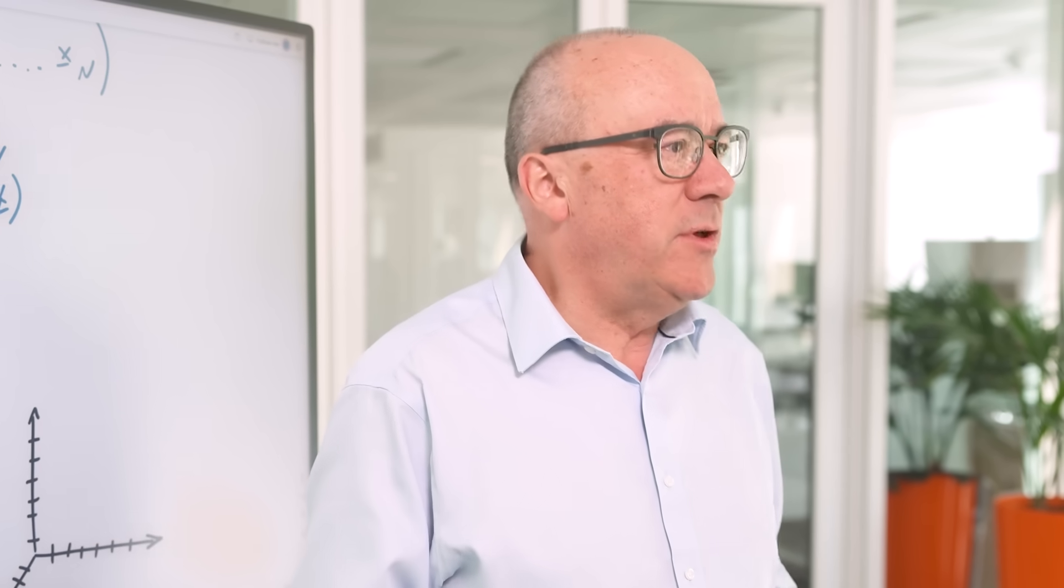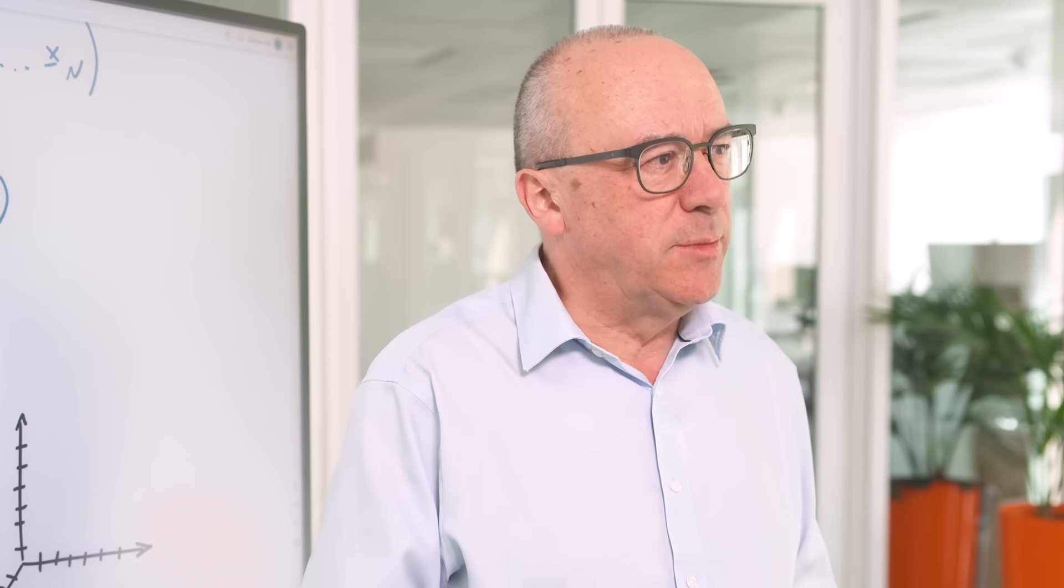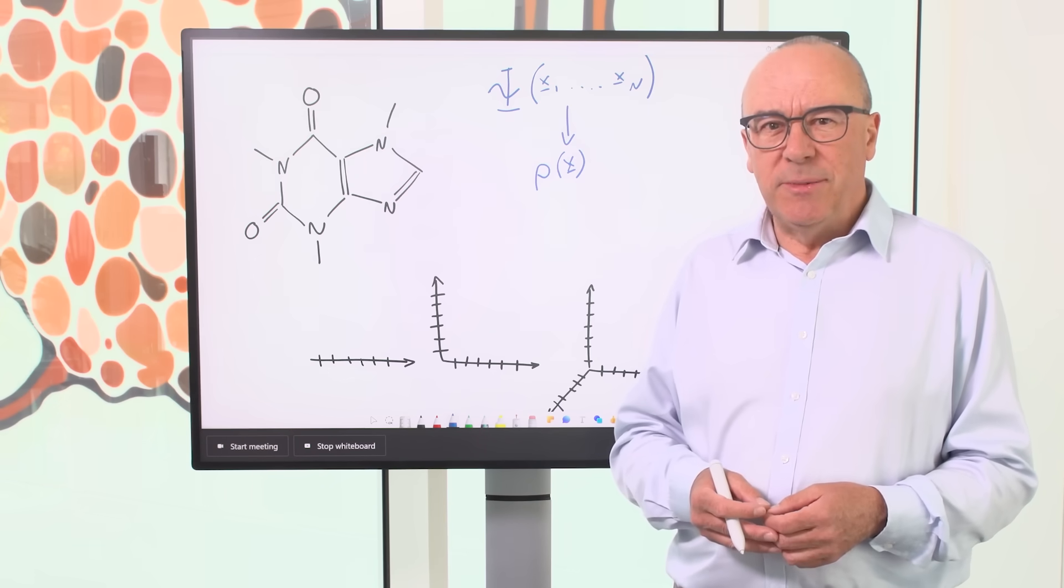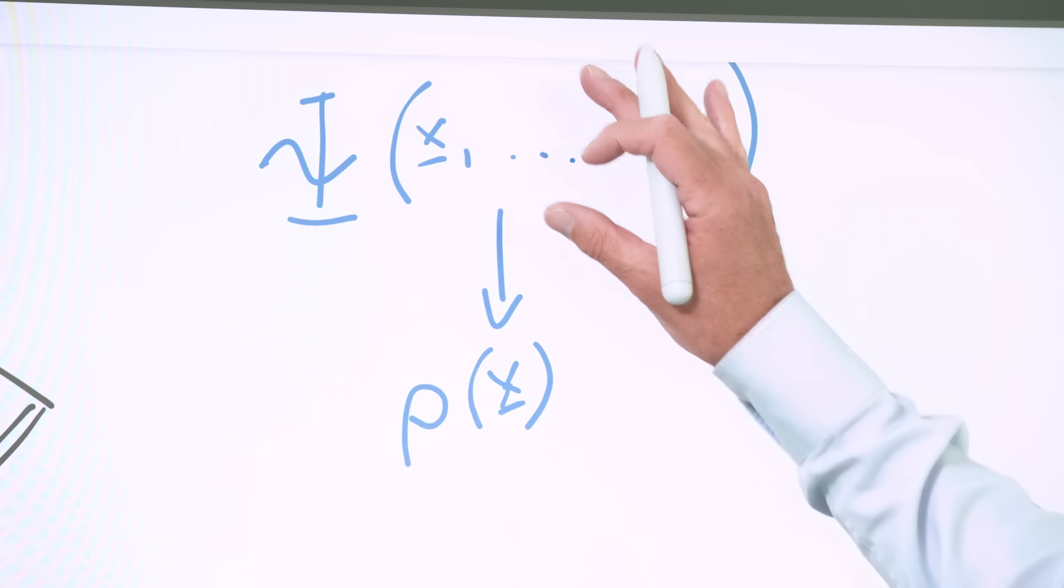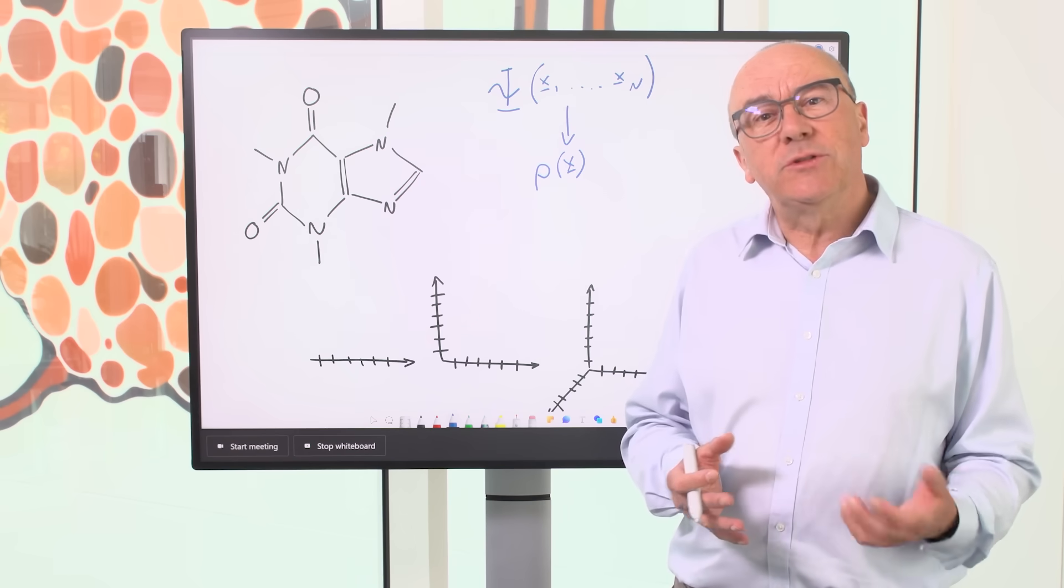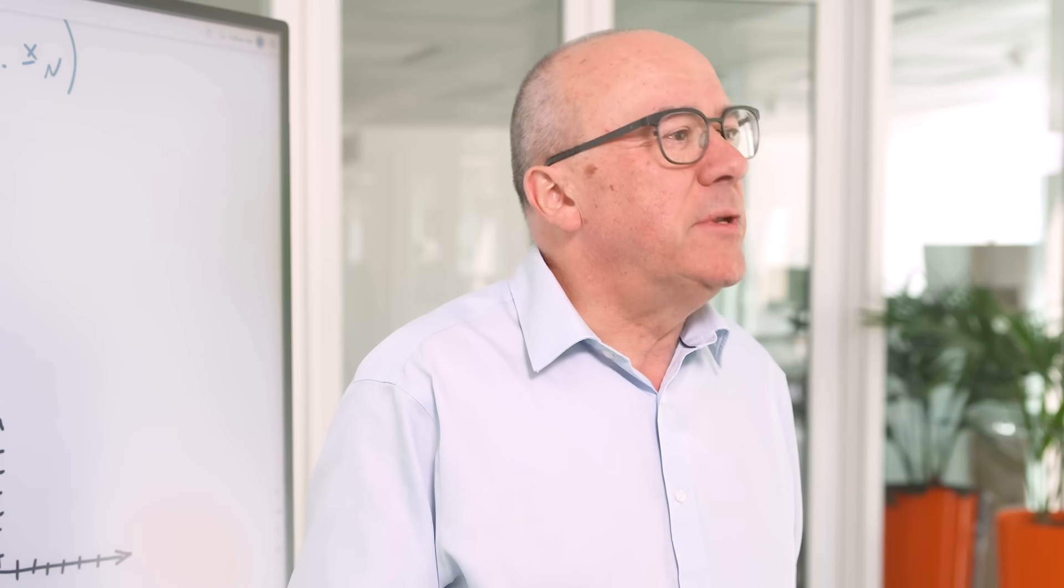And in fact, today, DFT is by far the most widely used technique for calculating the properties of molecules and materials. The important thing to understand, though, is that this is not an approximation. This reduction from exponential cost to cubic cost is exact, which is an extraordinary result. In fact, it's so extraordinary that Walter Cohn won the Nobel Prize in Chemistry in 1998 for development of DFT.